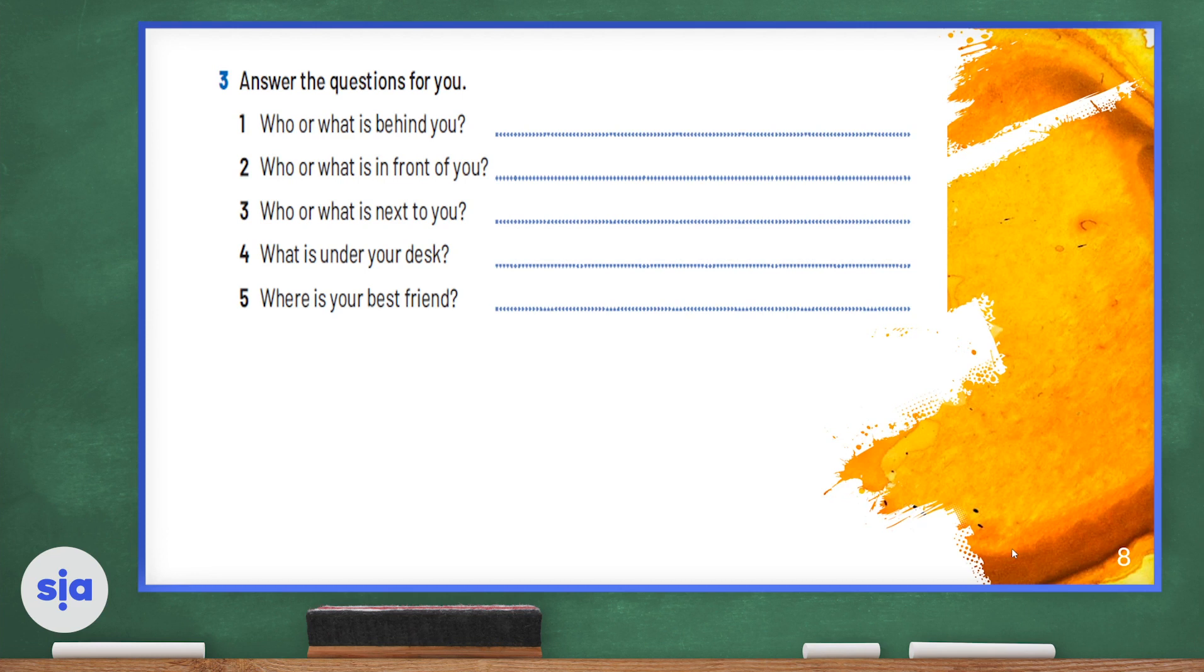Number three: who or what is next to you? Next to me is just a wall. What is next to you? Number four: what is under your desk? Well, for me I have nothing under my desk. What is under yours? Number five: where is your best friend? For me, my best friend is at home. Where is your best friend? Please write all your answers down. You may pause the video if needed.